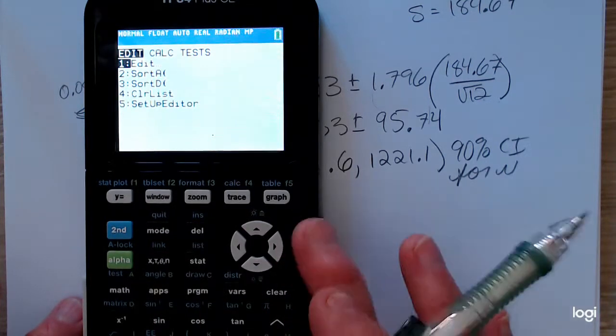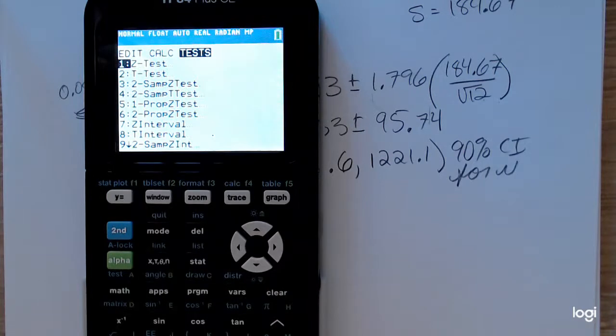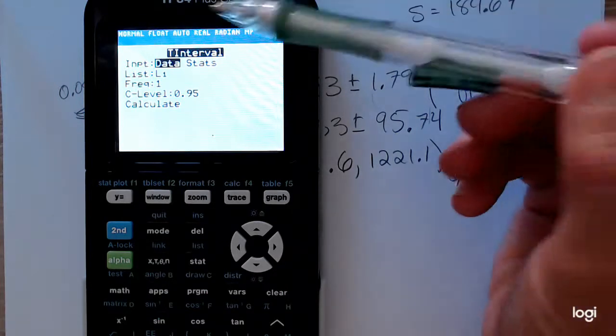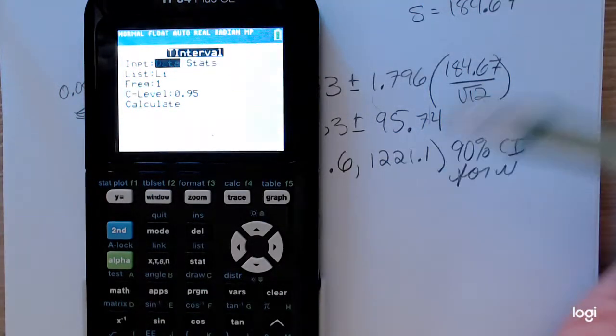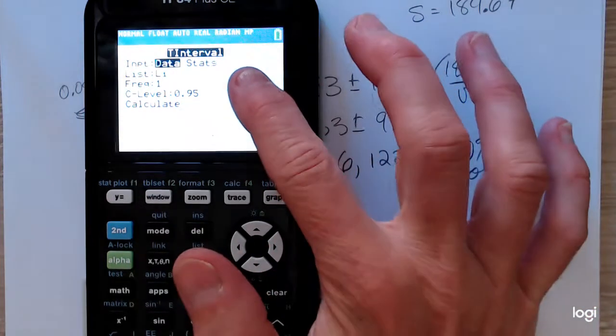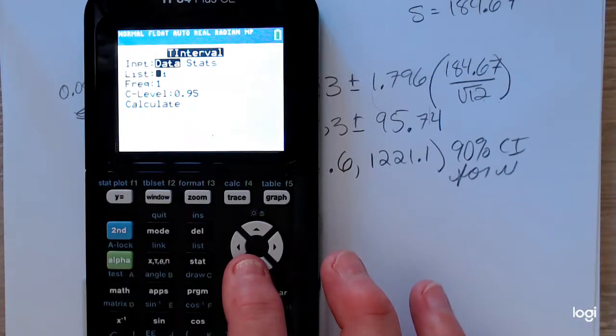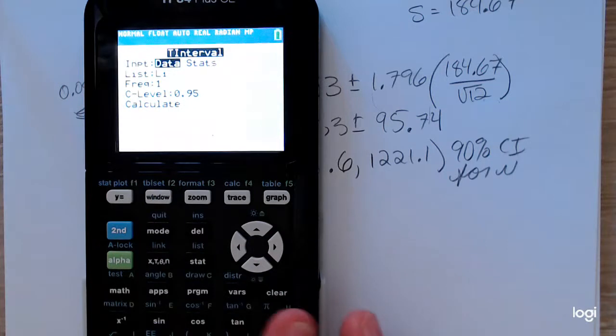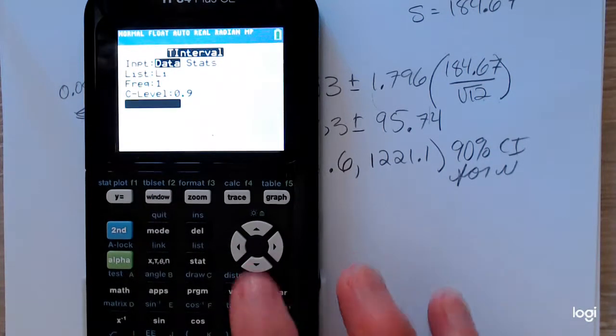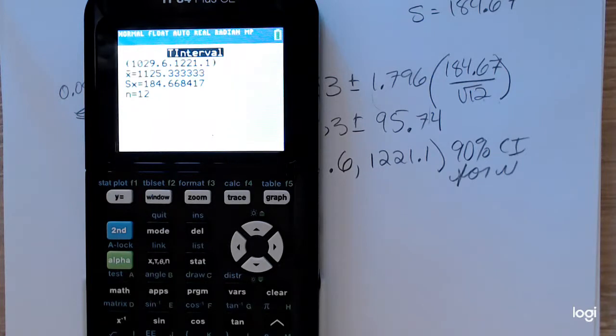you press your stat button, right arrow over to tests, and you want to scroll down to the T interval. We're finding a confidence interval for the mean when sigma is unknown, so we want to use the T distribution in constructing that interval. And I'll have two options, either I'll have the raw data in the list, which is what I have, or I'll have the summary statistics, which I could use since I found those already. And my data is in list one, so I can leave that alone, and I just need to change my level of confidence and enter.